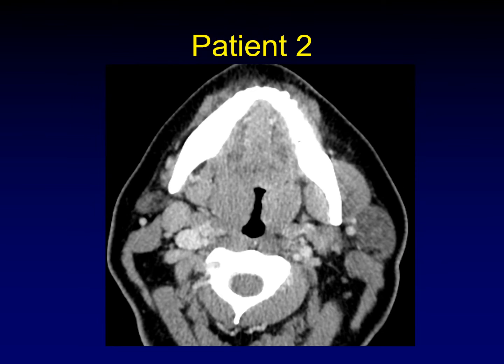Here's patient number two. Once again, we can see enlargement of the palatine tonsils. There is involvement of the entirety of Waldeyer's ring, just like in the last patient.